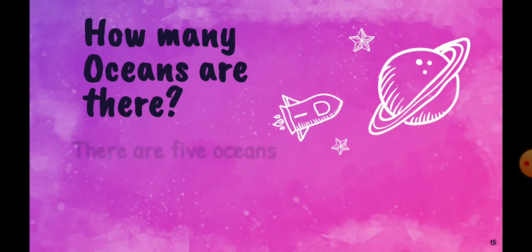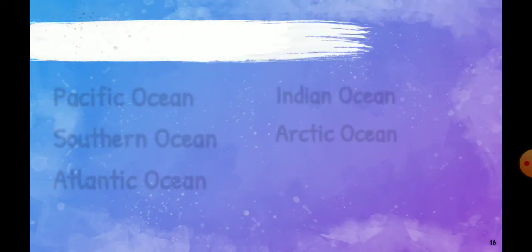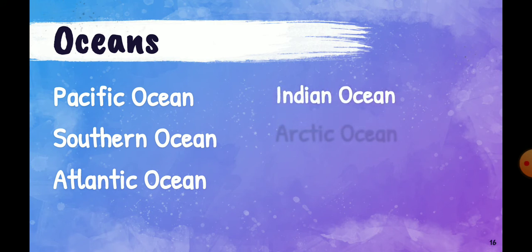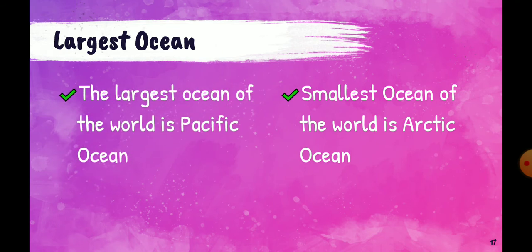How many oceans are there? There are five oceans on the earth. Their names are: Pacific Ocean, Southern Ocean, Atlantic Ocean, Indian Ocean, and Arctic Ocean. The largest ocean of the world is the Pacific Ocean, and the smallest ocean of the world is the Arctic Ocean.